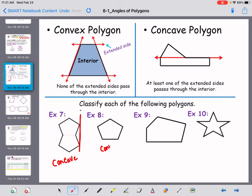Number eight is convex. Nine is convex. And ten is concave.